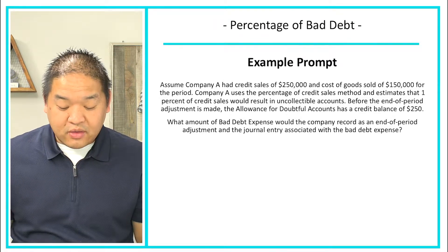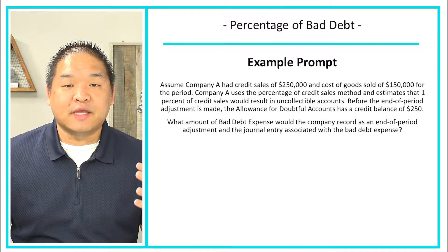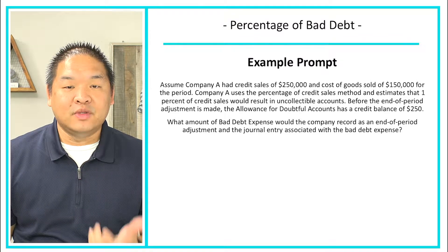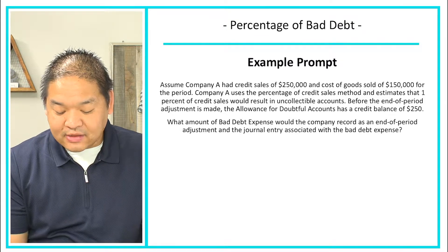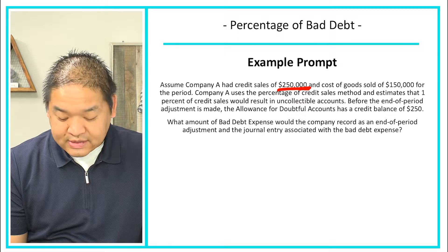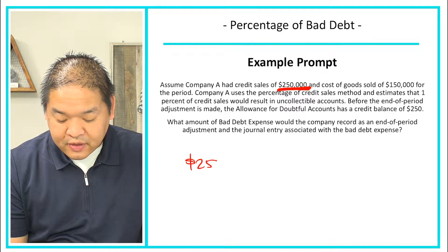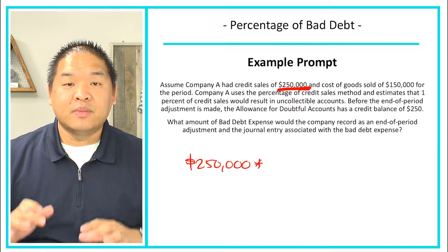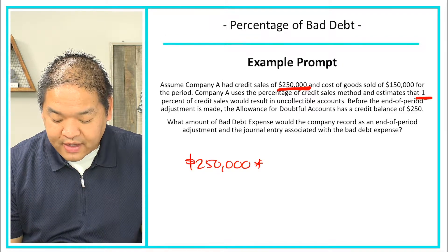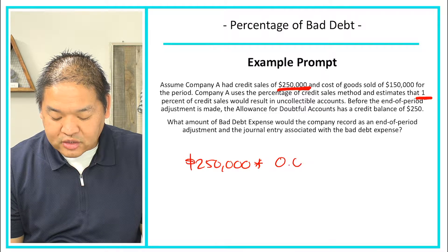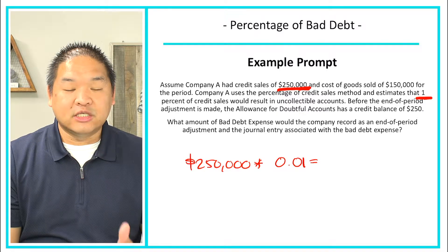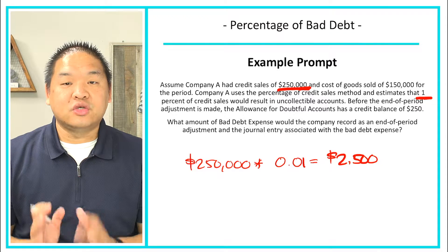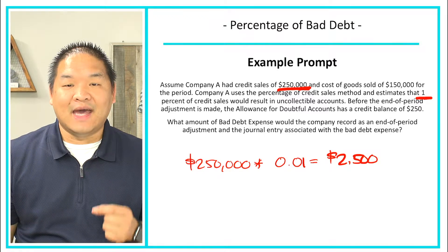We can calculate the bad debt expense based on the information given. The first thing we need is the net credit sales, which is $250,000. We're going to take $250,000 and multiply it by our bad debt loss rate, which is 1% — or 0.01 in decimal form. That gives us $2,500, so $2,500 would be our bad debt expense.